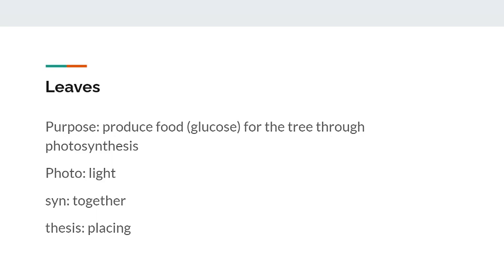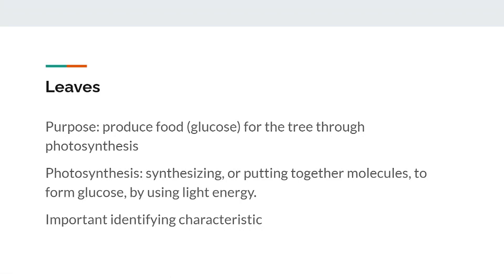The leaves of the tree are where photosynthesis takes place, or where the fruit of the tree is made. If we examine the structure of the word photosynthesis, we can get an idea of its meaning: 'photo' refers to light, 'syn' means together, and 'thesis' comes from the Greek word for placing. So, putting those together, we get the definition of photosynthesis, which is synthesizing or putting together molecules to form glucose by using energy from light. The leaves need to be exposed to sunlight in order to make food, which is why it is important that the trunk raises them up high above obstacles that might obstruct sunlight. Leaves come in all different shapes and sizes and are typically the primary characteristic used to determine the species of a tree — taking a leaf is usually your best bet for identification.